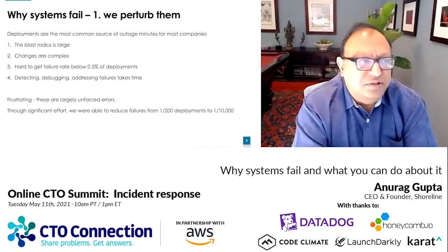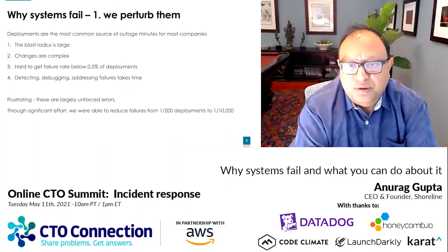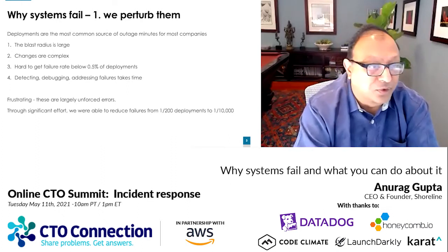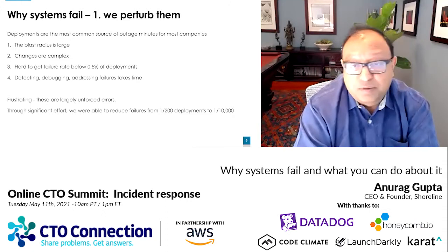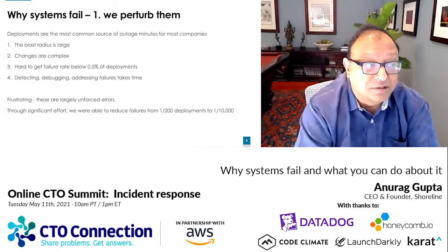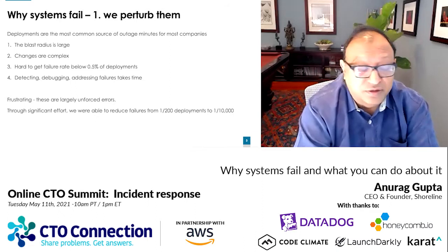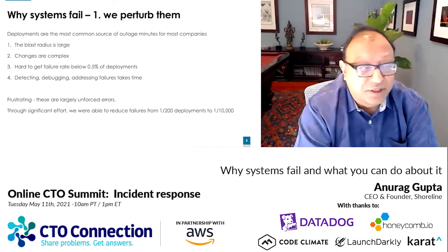The first reason systems fail is that we modify them. If you're modifying something, it's more likely to fail than if you don't modify it. Deployments are the most common source of outage minutes, both because the blast radius is large — you're changing your entire fleet — and the changes tend to be complex.